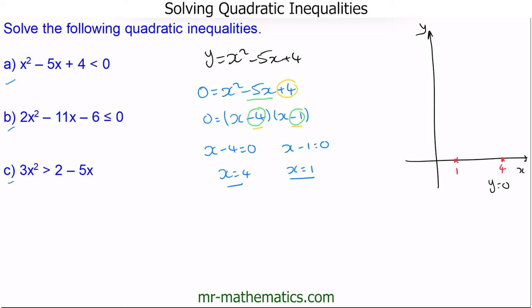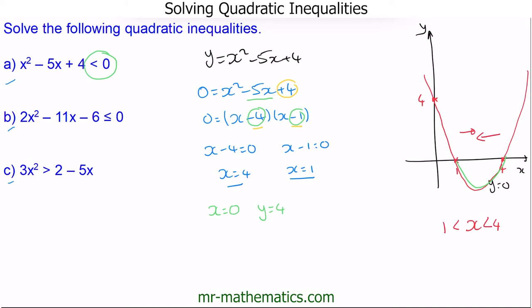We can work out the y-intercept using x equals 0, which gives y equals 4, so we can plot this point. Our parabola sketch graph will pass through these three points. Now we can use this to solve the inequality. Since it must be less than 0 — below the x-axis — our solution is when x is greater than 1 and less than 4.